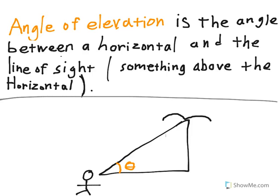Okay, so the angle of elevation is the angle between a horizontal and the line of sight for something above the horizontal. So this is an old guy looking up at a seagull probably.